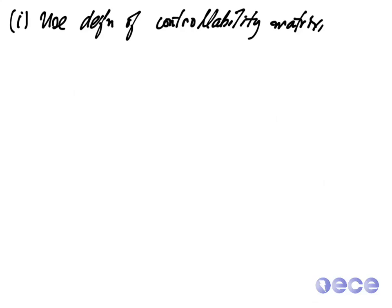So for part one, we'll use the definition of controllability matrix, which we called E in some earlier lectures. So we build E as first the vector B and then the vector AB.